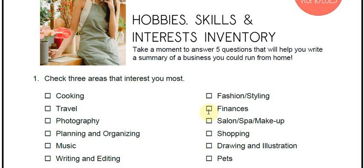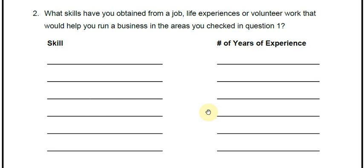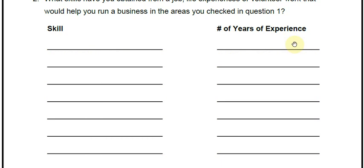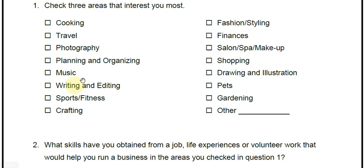After you have selected the three areas that interest you most, you're going to write down the skills that you've obtained from a job, from life experiences, or volunteer work that would help you run a business in these areas. From the three areas you selected, just write down the skills that tie in with that. You write your skill here and then maybe the number of years of experience. You can also write down whether you feel that you are a beginner, intermediate, or advanced level. That way it gives you a quick look at your skills and how comfortable you feel when it comes to pursuing a business in the areas discussed in question one.